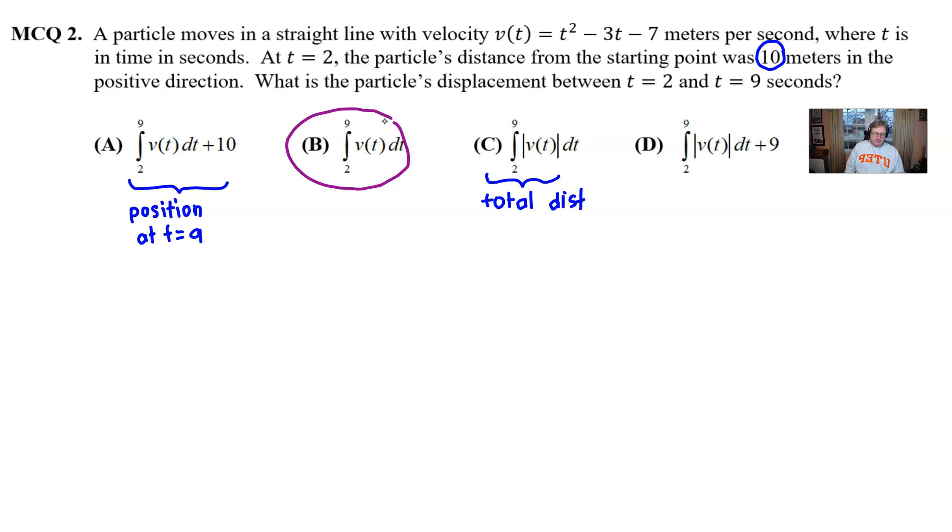If you had to establish some connotation for d, I would only be able to tell you that it would be, I guess, the total distance the particle travels from time 2 to time 9 plus 9 more meters in this case, which really doesn't make a lot of sense, I think, overall.